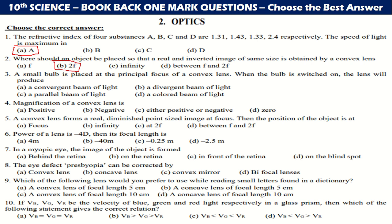A small bulb is placed at the principal focus of convex lens. When the bulb is switched on, the lens will produce a parallel beam of light. Magnification of a convex lens is either positive or negative. Magnification convex lens positive or negative.